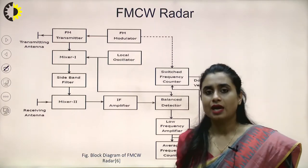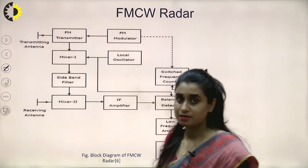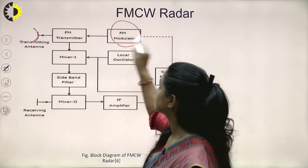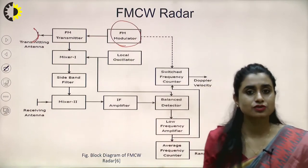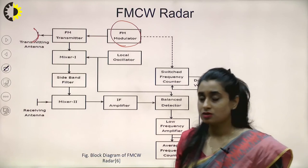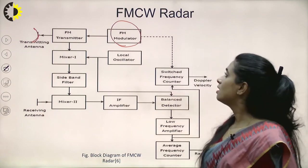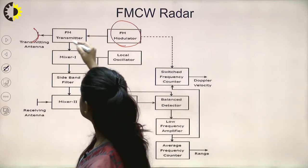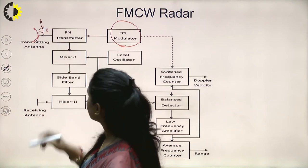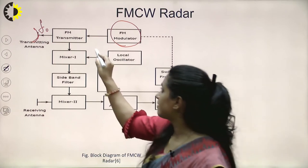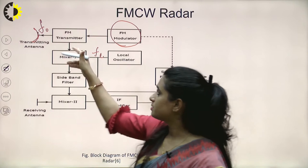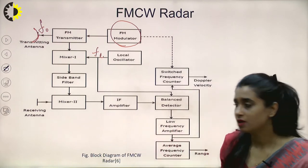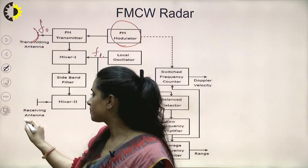Like all radars, the FMCW radar has a transmitter part and a receiver part with separate transmitting and receiving antennas. The key difference from CW radar is the additional FM modulator block. The frequency modulator produces a frequency-modulated signal of variable frequency - frequency as a function of time - which is supplied to the FM transmitter. The local oscillator here generates a signal of intermediate frequency fIF, rather than fl as in CW radar.